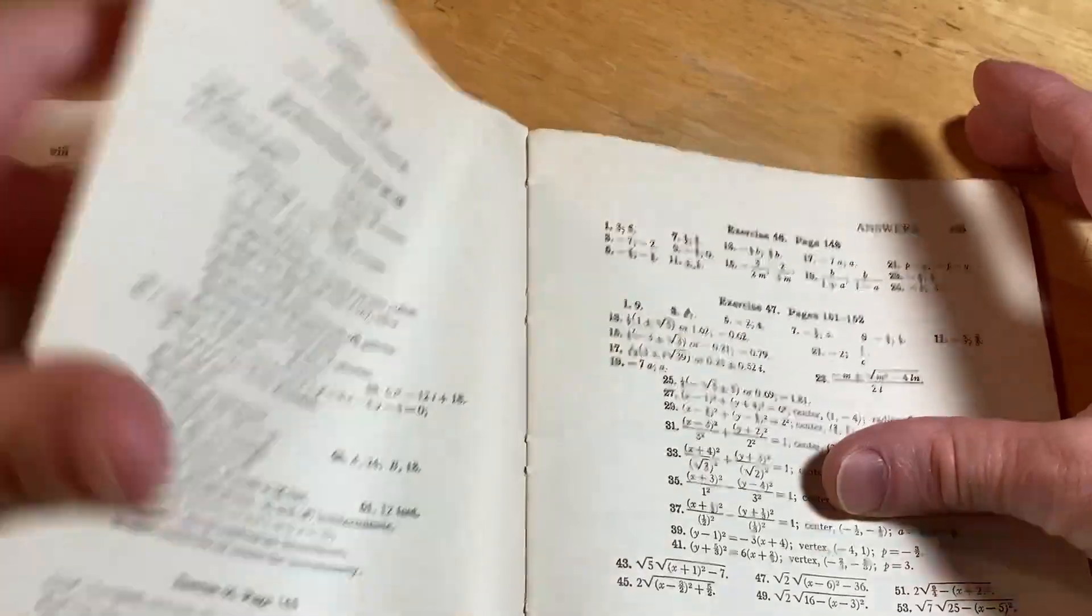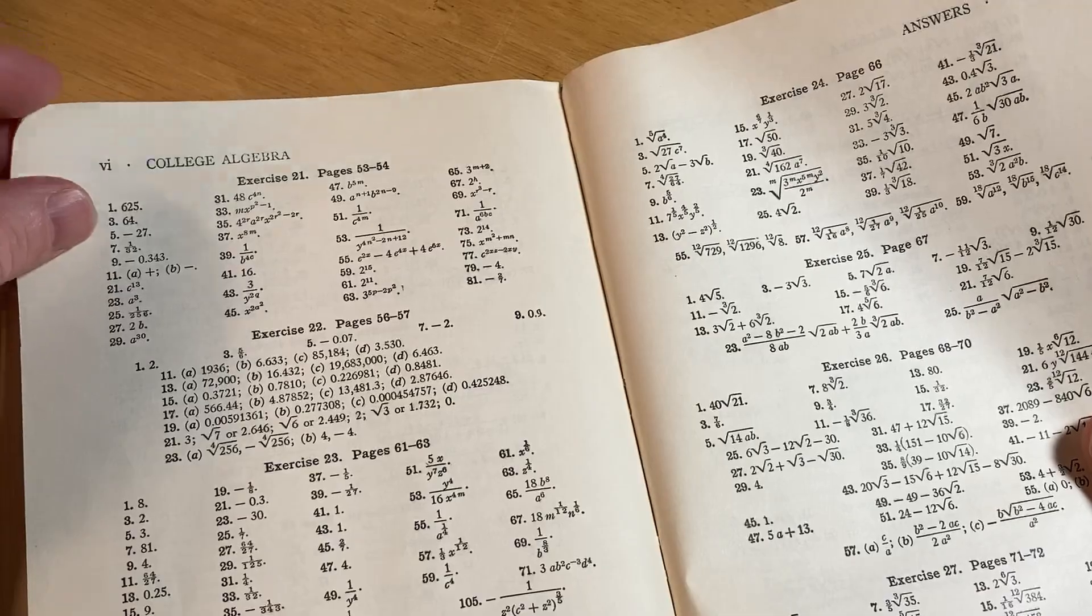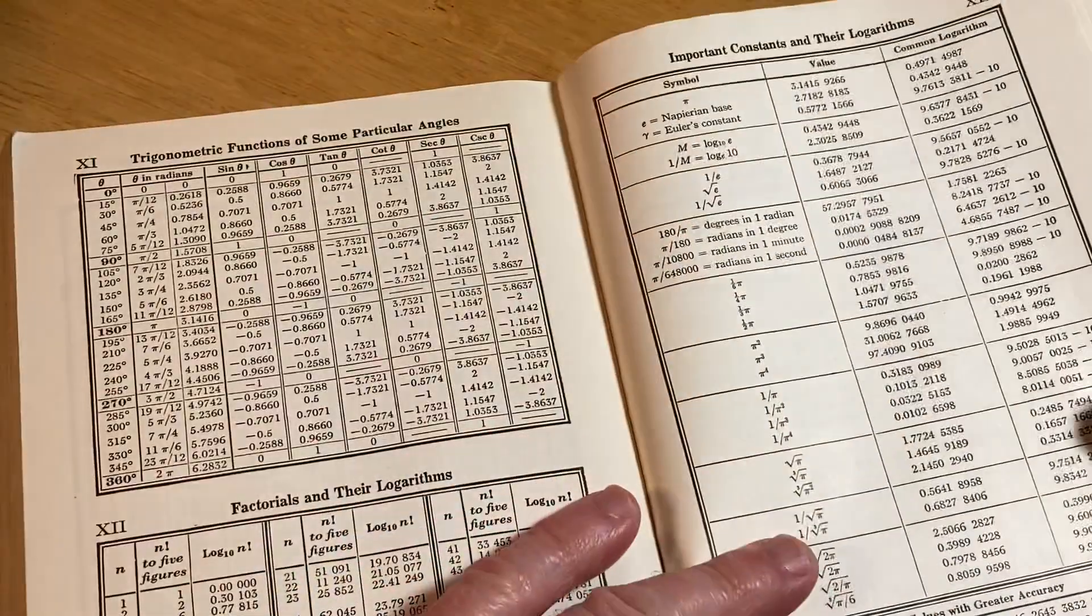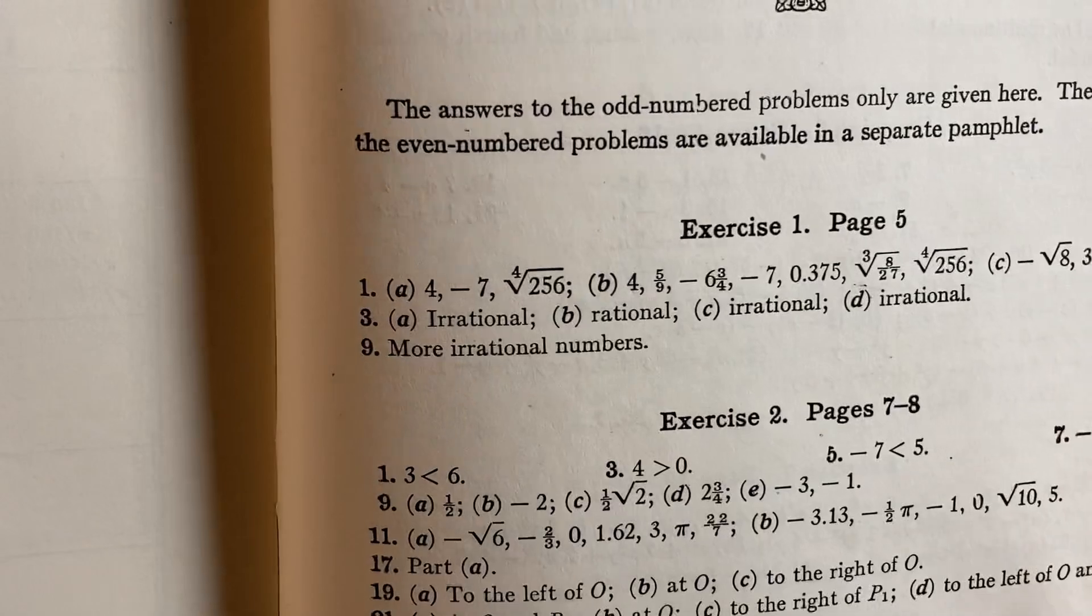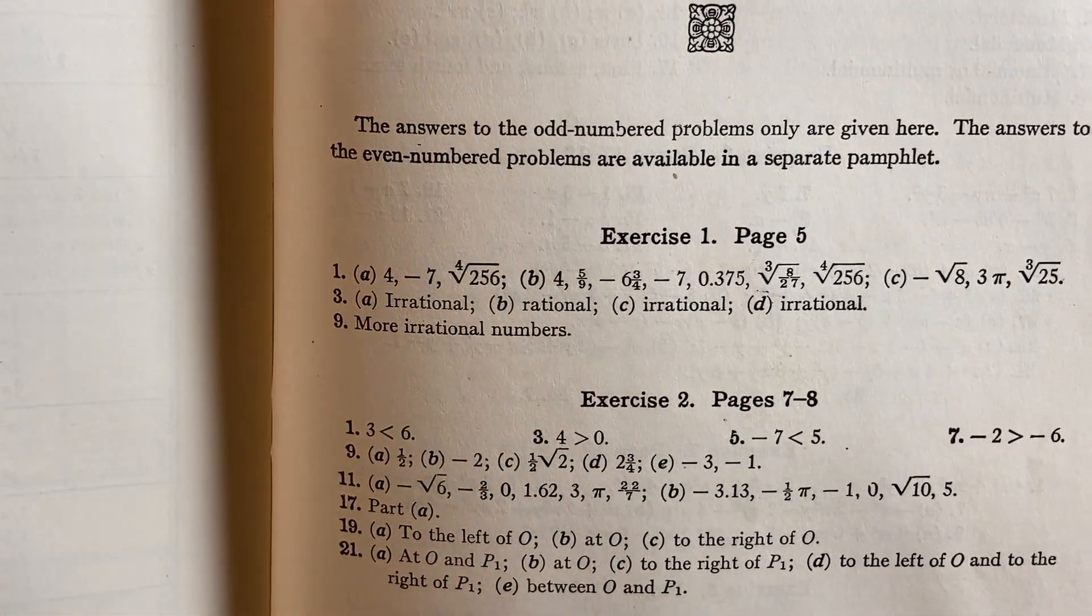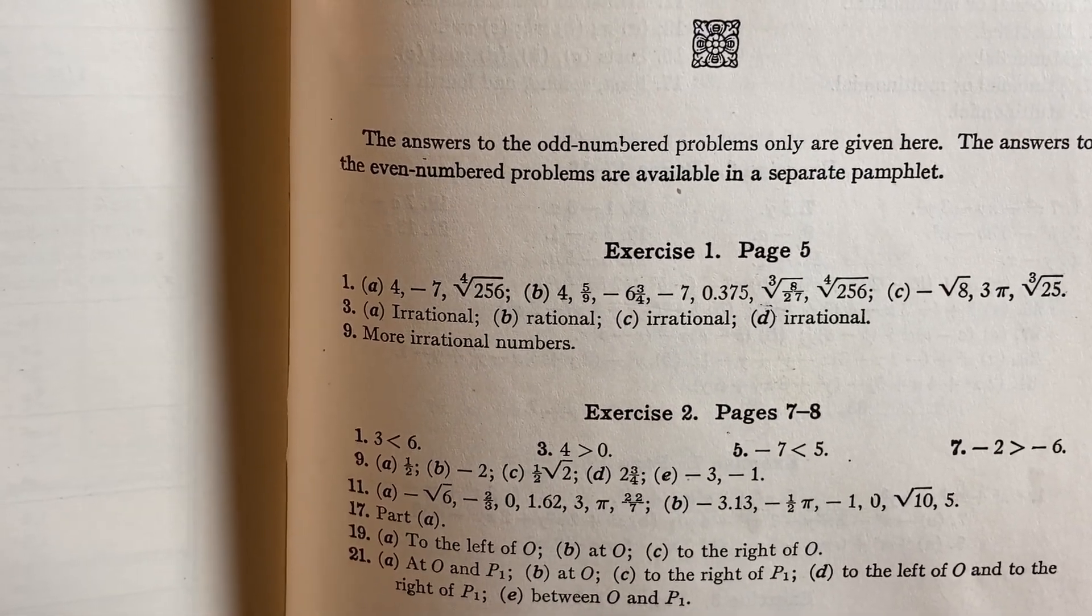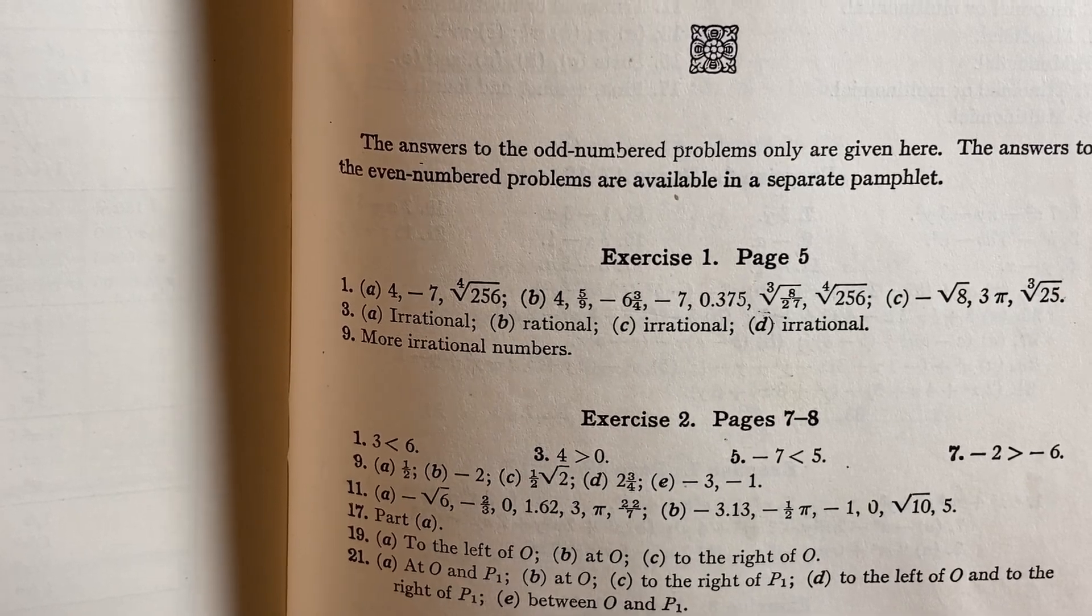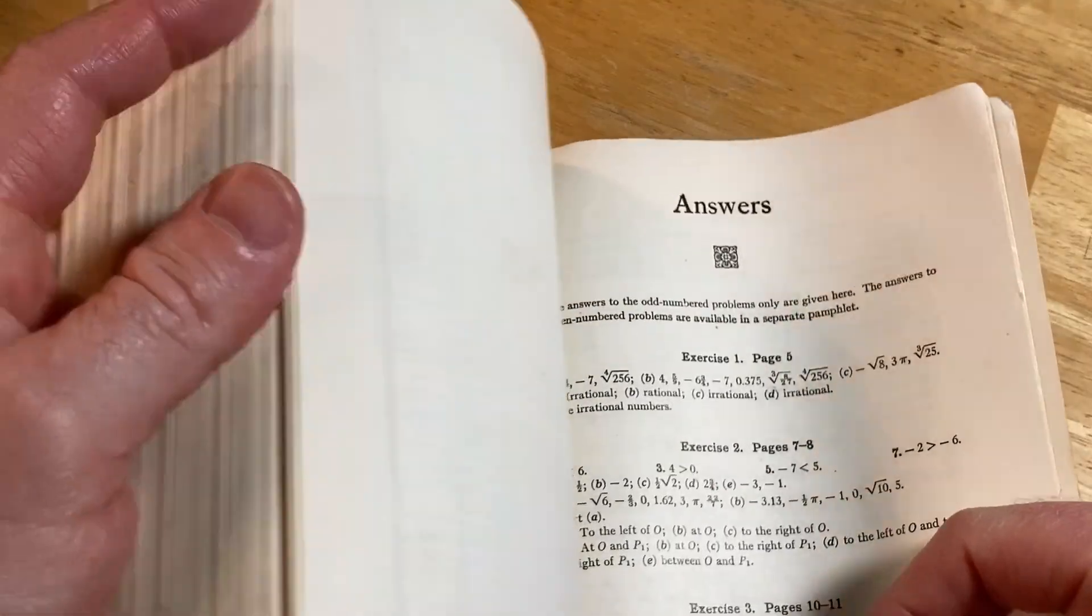And you see here you have some answers, right? You have answers. Now, some answers are missing, but you have answers. It says the answers to the odd number problems only are given here. The answers to the even number problems are available in a separate pamphlet. Right. Let's go ahead and take a look at this book.